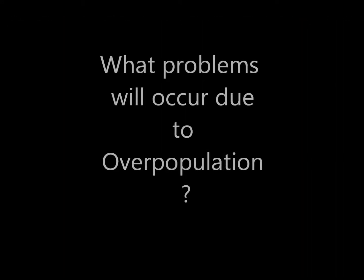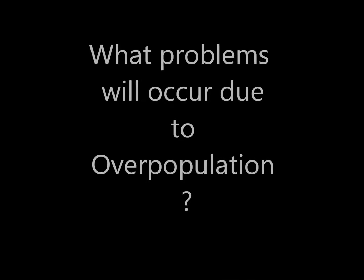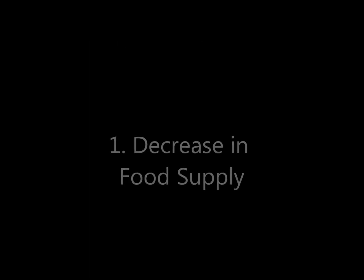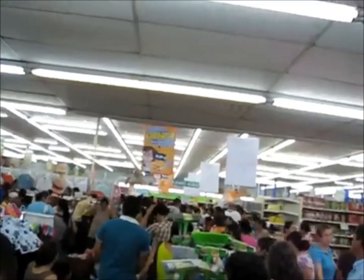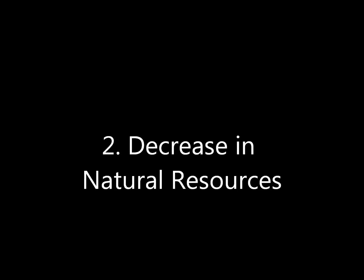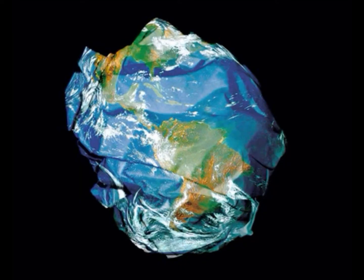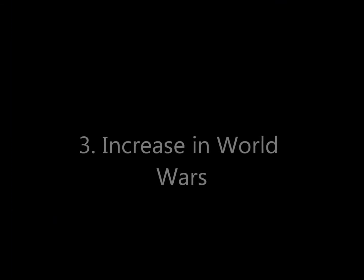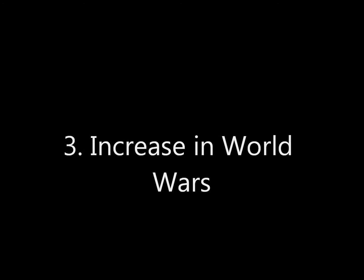What problems will occur due to overpopulation? Number one: decrease in food supply. Number two: decrease in natural resources. Number three: increase in world wars.